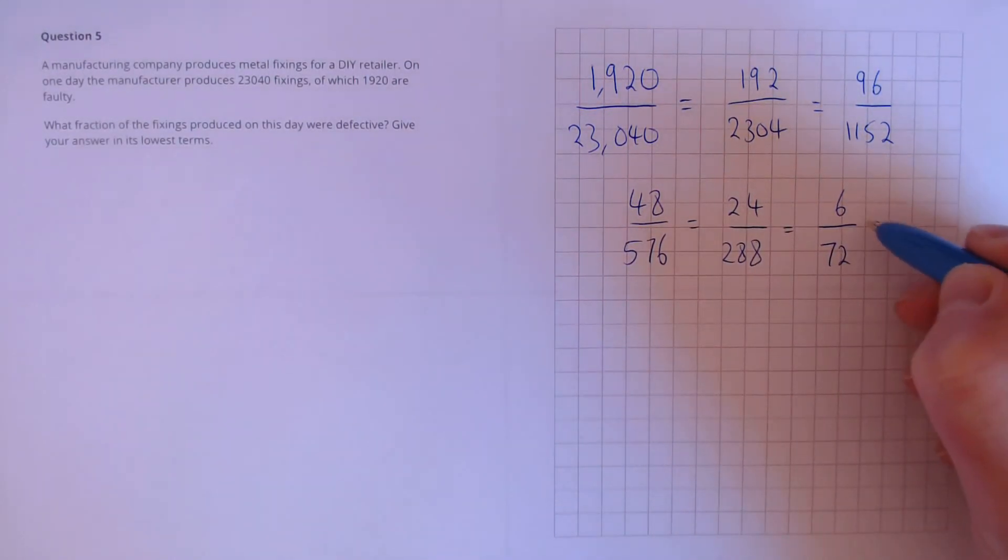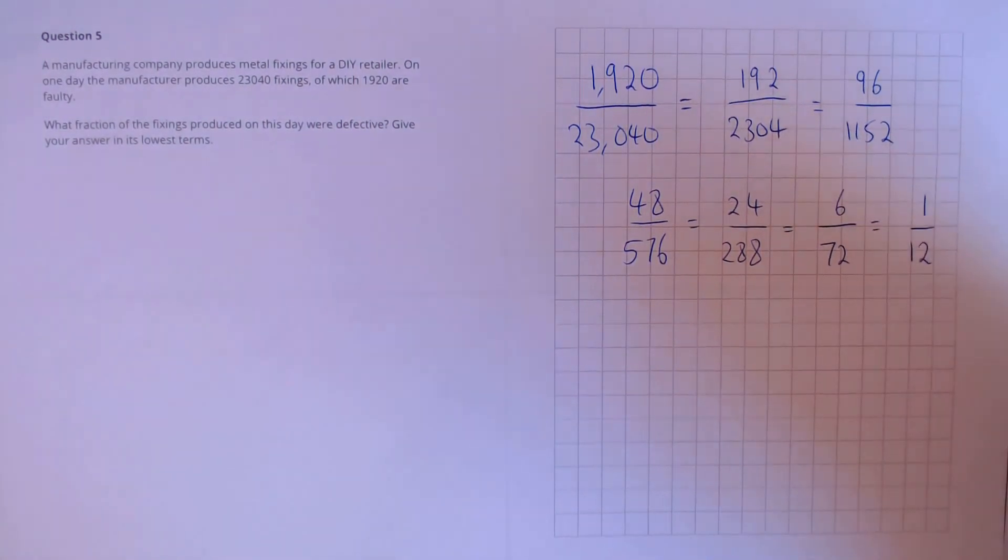Finally, our last cancellation, both these numbers divide by 6 to get 1 over 12. That's our final answer.